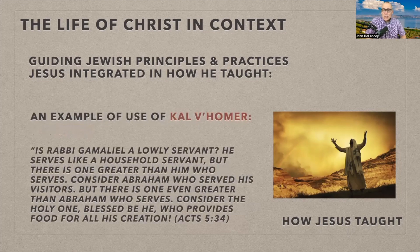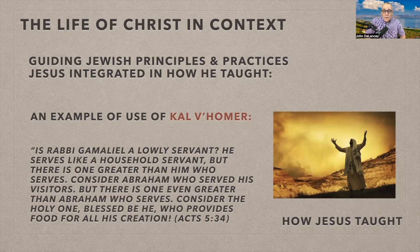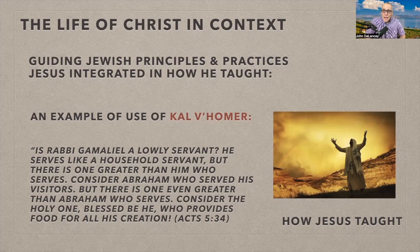Even in Acts chapter 5, Rabbi Gamaliel — grandson of Hillel — uses kal v'homer: Rabbi Gamaliel serves like a household servant, but there is one greater than him who serves. Consider Abraham who served his visitors, but there is even one greater than Abraham who serves. Consider the Holy One, blessed be he, who provides food for all his creation. So here we have an example of kal v'homer in the book of Acts.